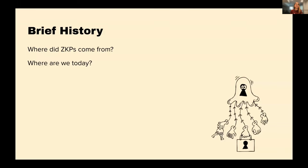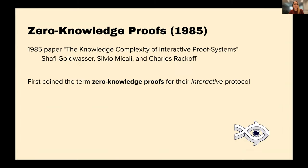Zero knowledge proofs come from such a rich background. The term was first coined in a 1985 paper by Shafi Goldwasser, Silvio Micali, and Charles Rackoff. Shafi Goldwasser and Silvio Micali both received the Turing Award — which is kind of the highest award you can get in cryptography and mathematics — for their work in zero knowledge proofs.